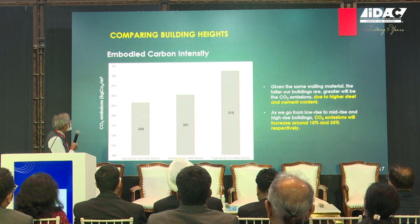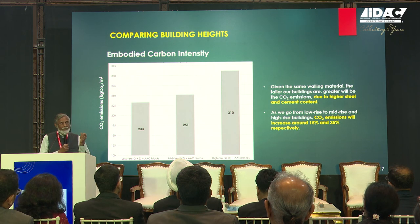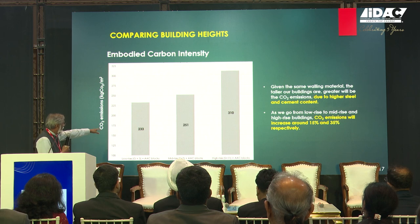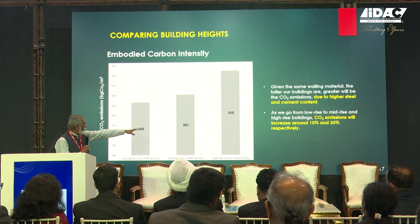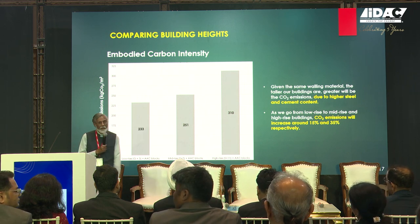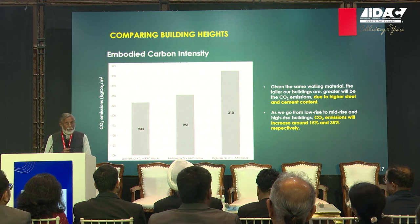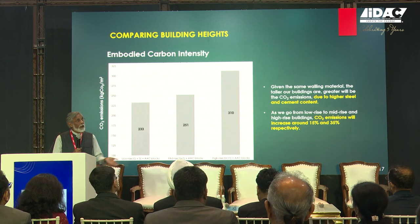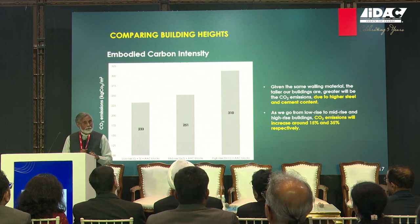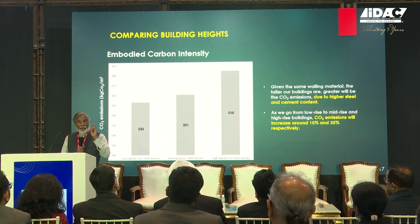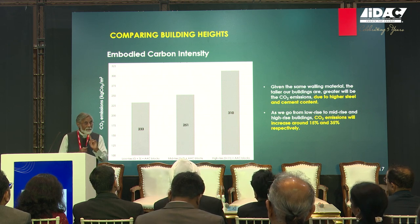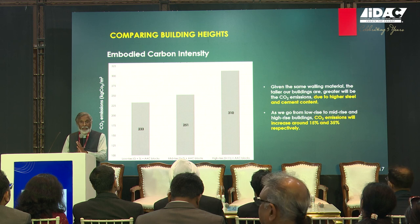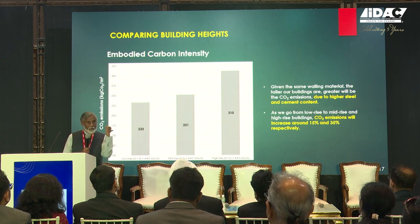Some more research: embodied carbon intensity — how much embodied carbon there is per square meter of built area. A four-story building has 233 units; a six-story building, 251 units; a twelve-story building, 310 units. The taller you go, the greater the embodied carbon. So why do we want to go taller? If you want to cut down on carbon emissions, why go taller? And don't forget that it is the carbon emissions of construction — not the operation of buildings — that is going to be the main concern for the next two decades, because air conditioning for most people is coming later, not just now.